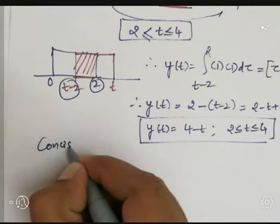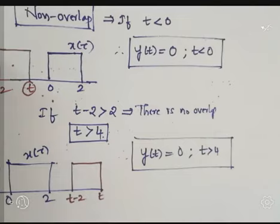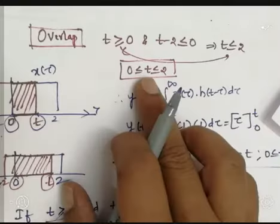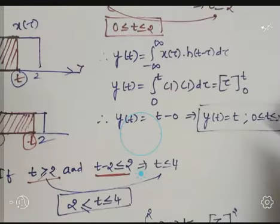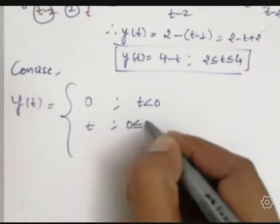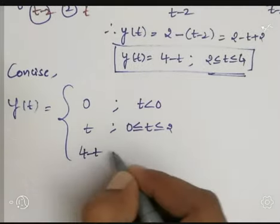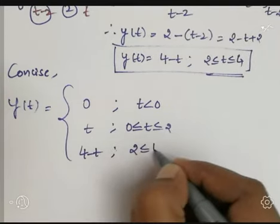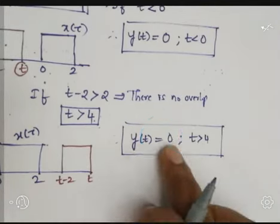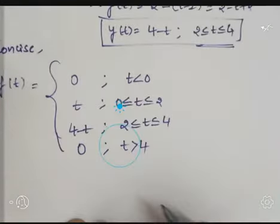Summarizing all conditions: y(t) = 0 for t less than 0; y(t) = t for t between 0 and 2; y(t) = 4 minus t for t between 2 and 4; and y(t) = 0 for t greater than 4. Now let us sketch this result signal step by step.